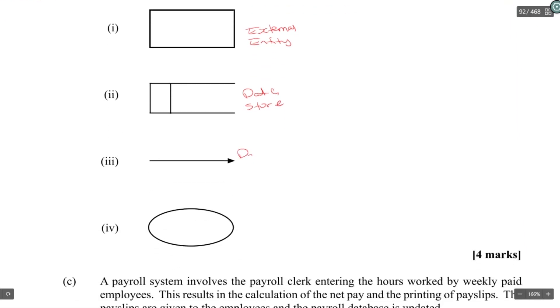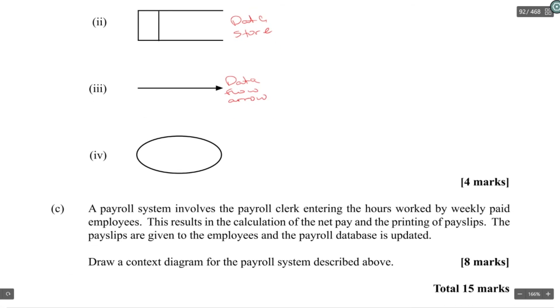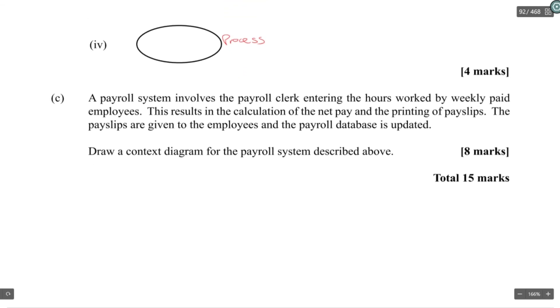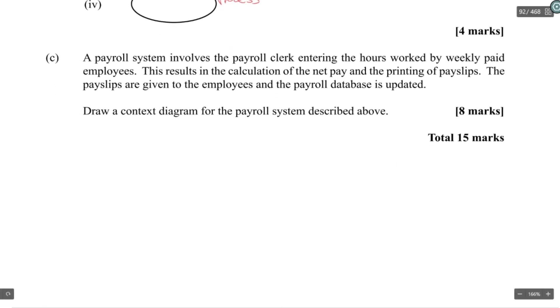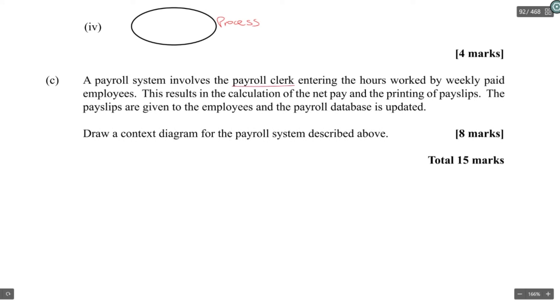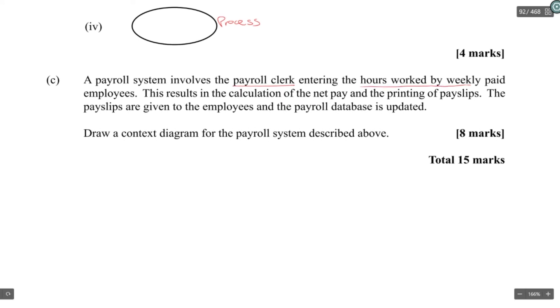Just remember that previous question, you have to state the DFD within the software engineering process. So rectangle is the external entity, that is a data store, the arrow is a data flow arrow if you want to say that, and the oval is a process. Now they want us to do a context diagram for a payroll system.